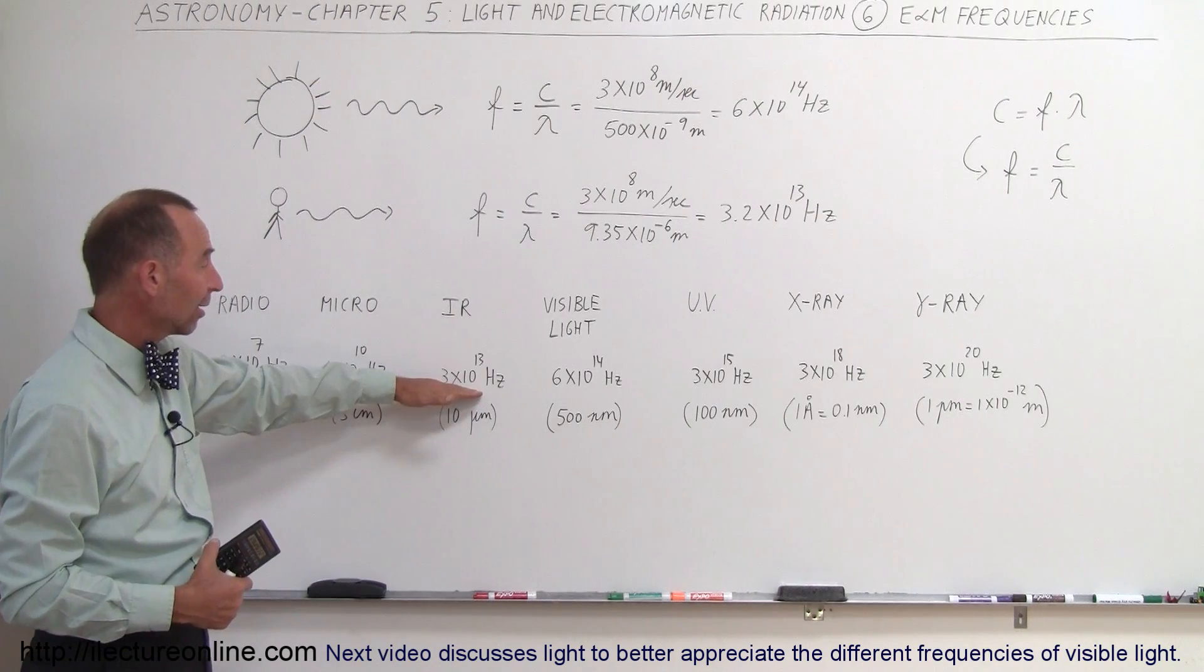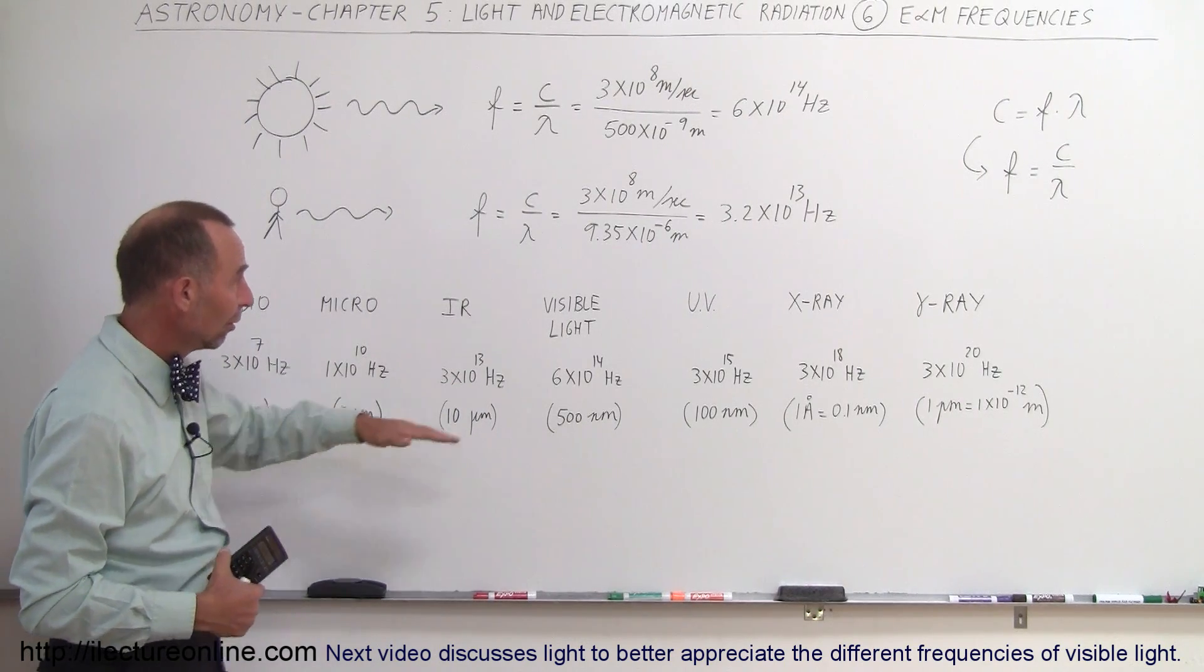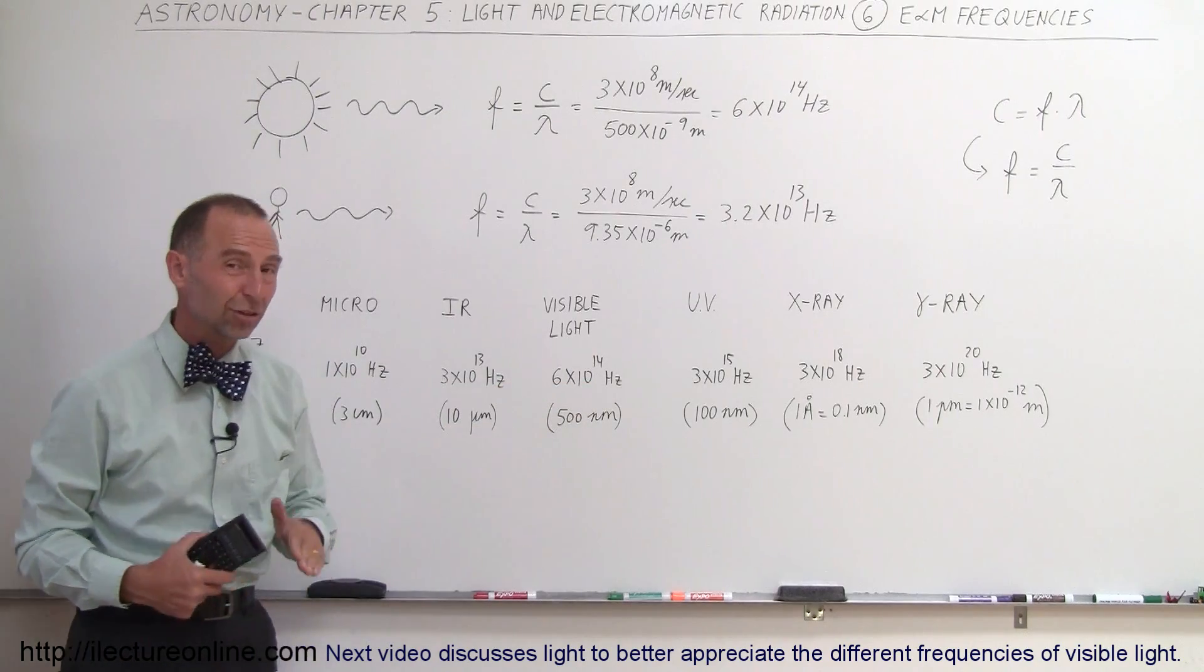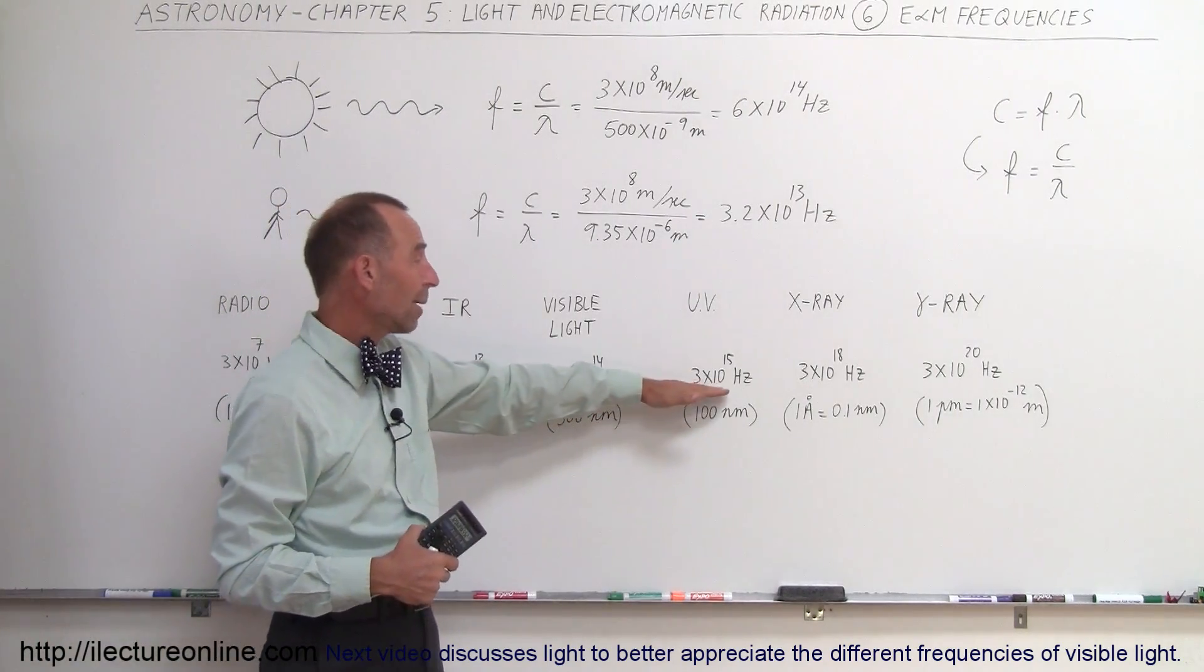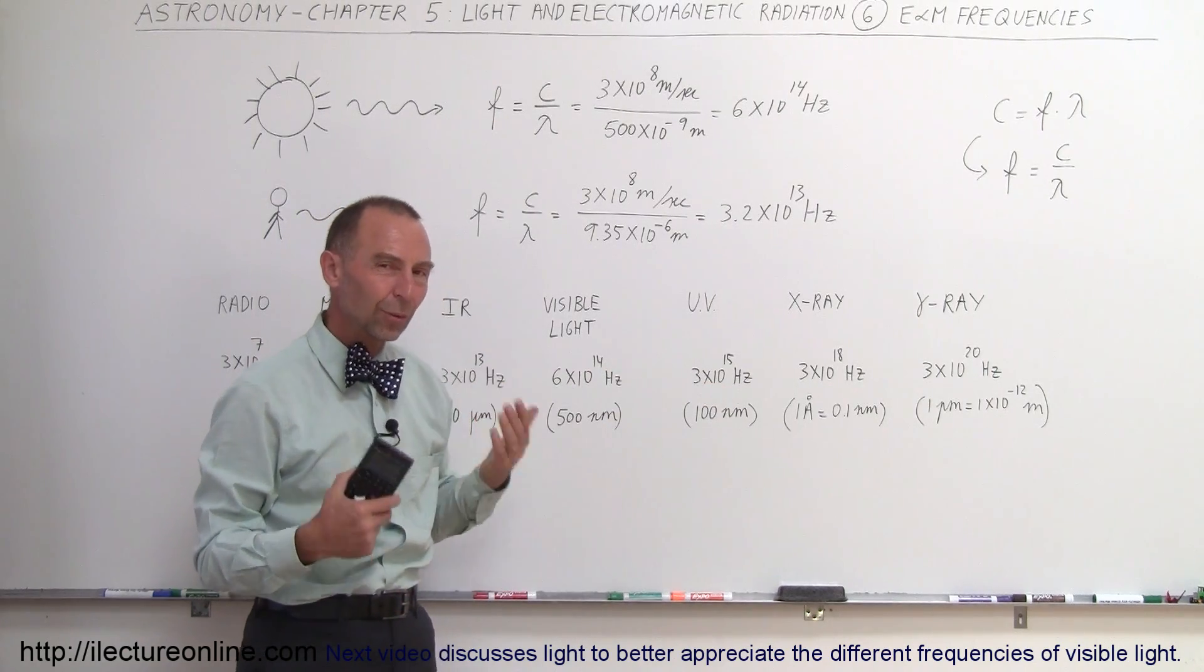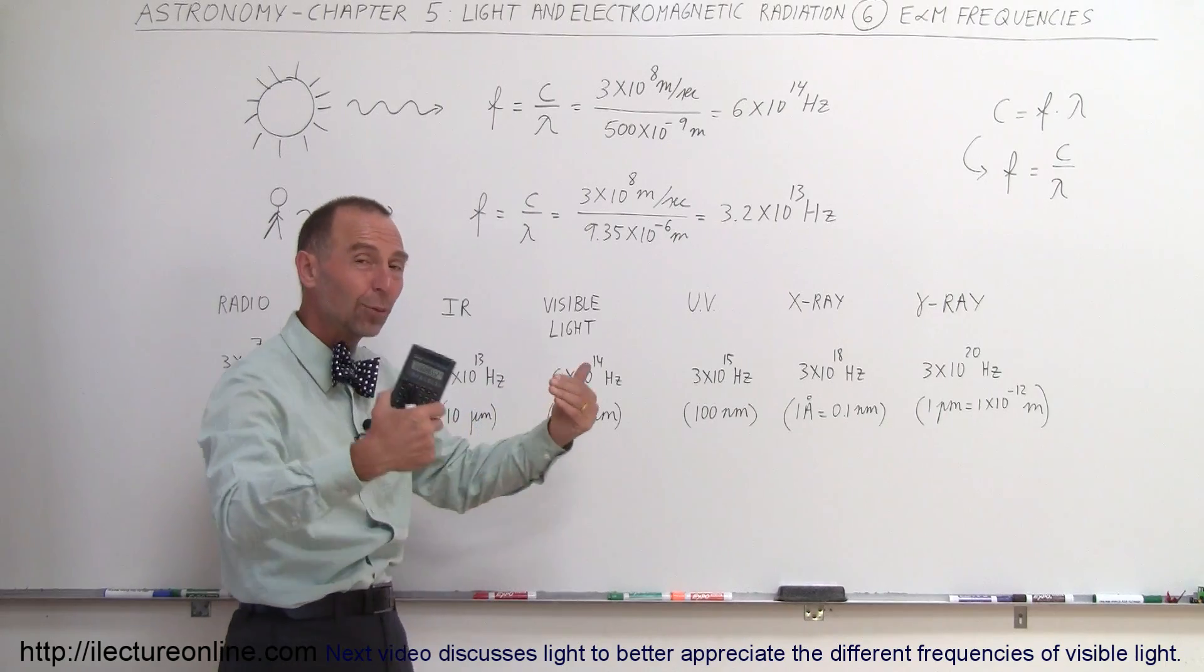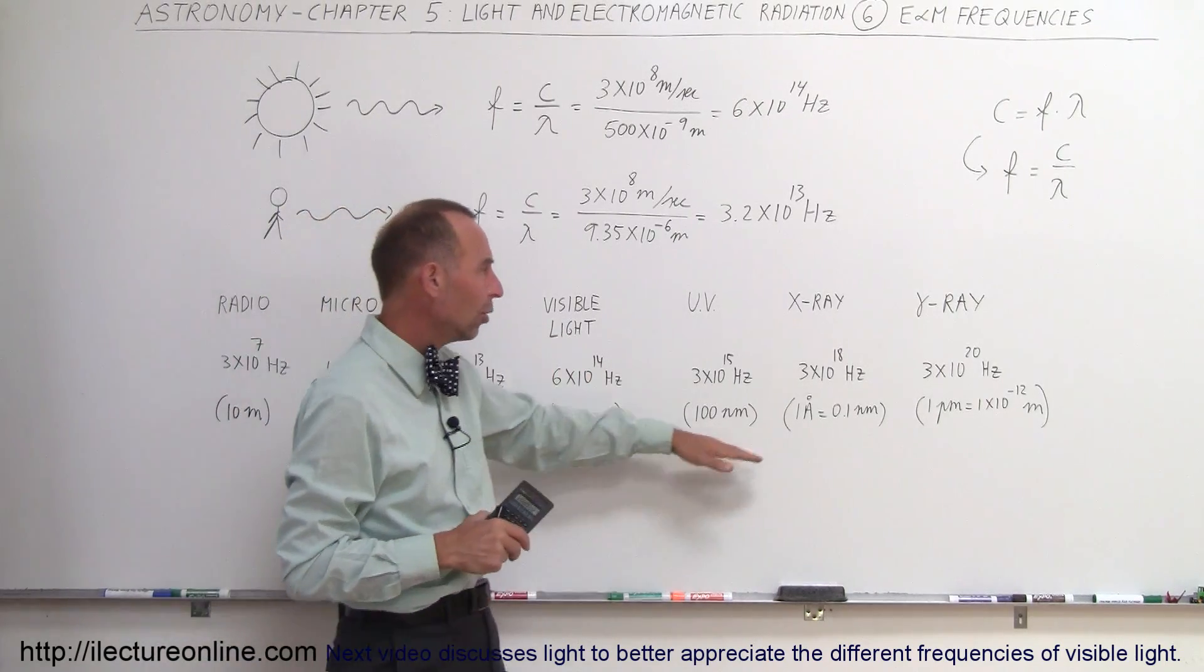Infrared radiation from our bodies would be about 3 times 10 to the 13 hertz, that's about 30 trillion hertz. Visible light would be 600 trillion hertz. UV radiation is in the range of about 3,000 trillion hertz, and that's at the radiation range where when we receive that radiation, it becomes damaging to our bodies, and we'll learn all about why that is so.